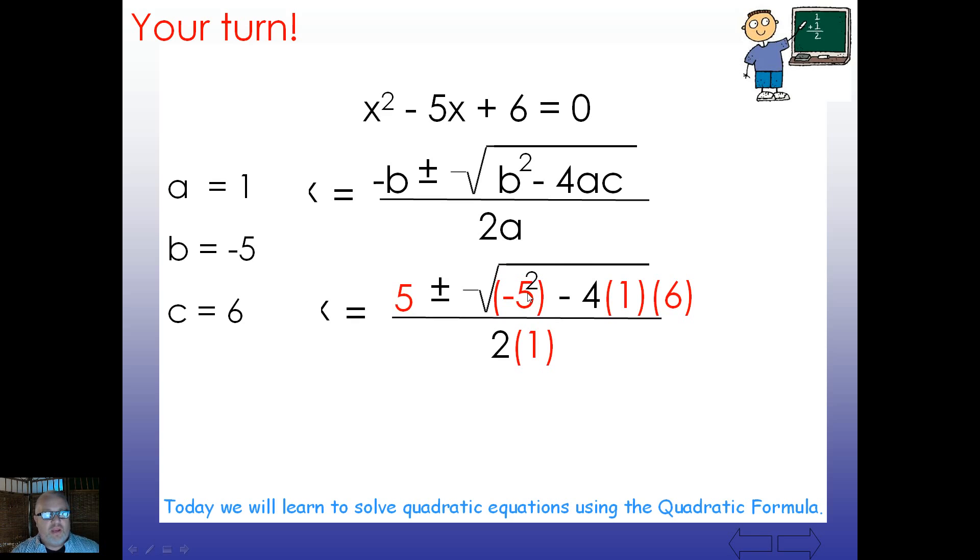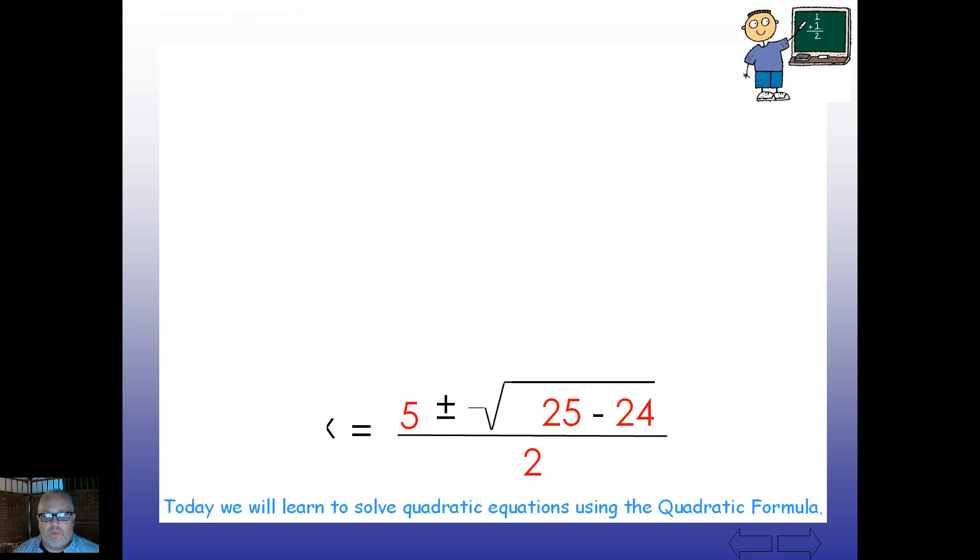Got a little bit of a typo here. This 2 should be out here. But that's all right. We know that negative 5 squared is going to be 25. Don't forget to multiply backwards here. Multiply backwards. 6 times 1 times negative 4. That's going to give you that inside the radical sign there, 25 minus 24. Which happens to be? Well, it's simple. That's the number 1.